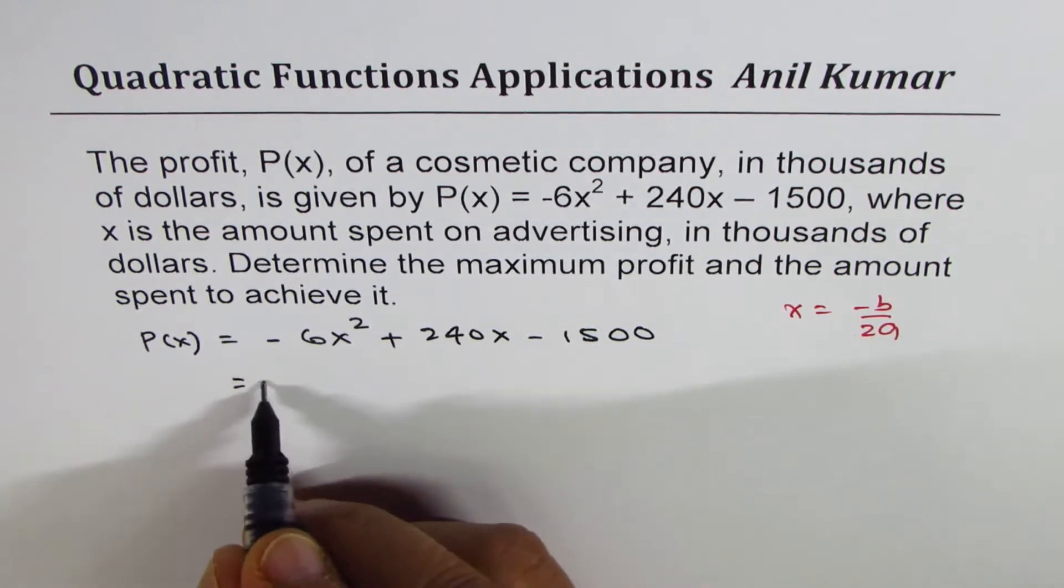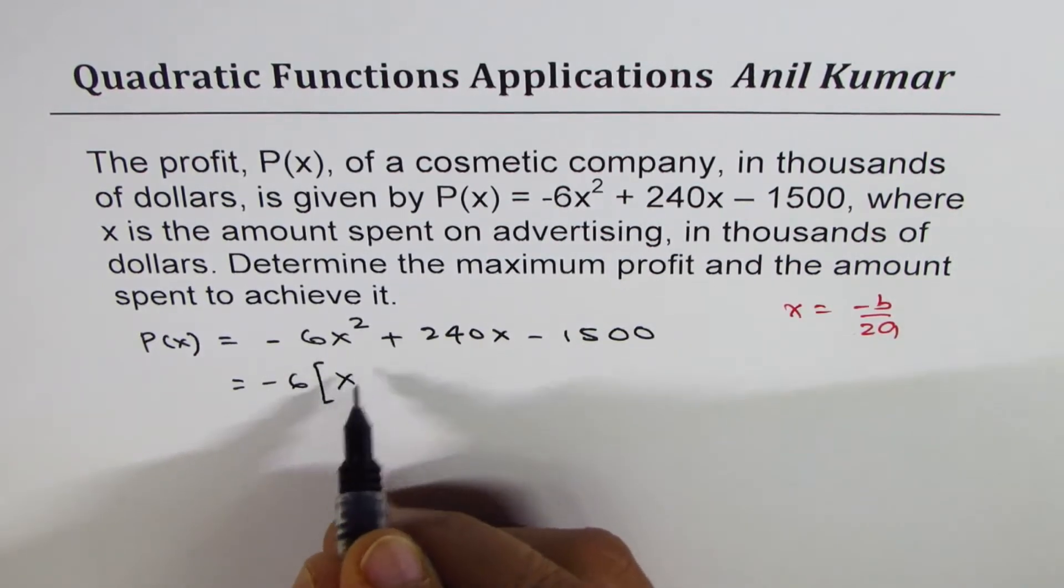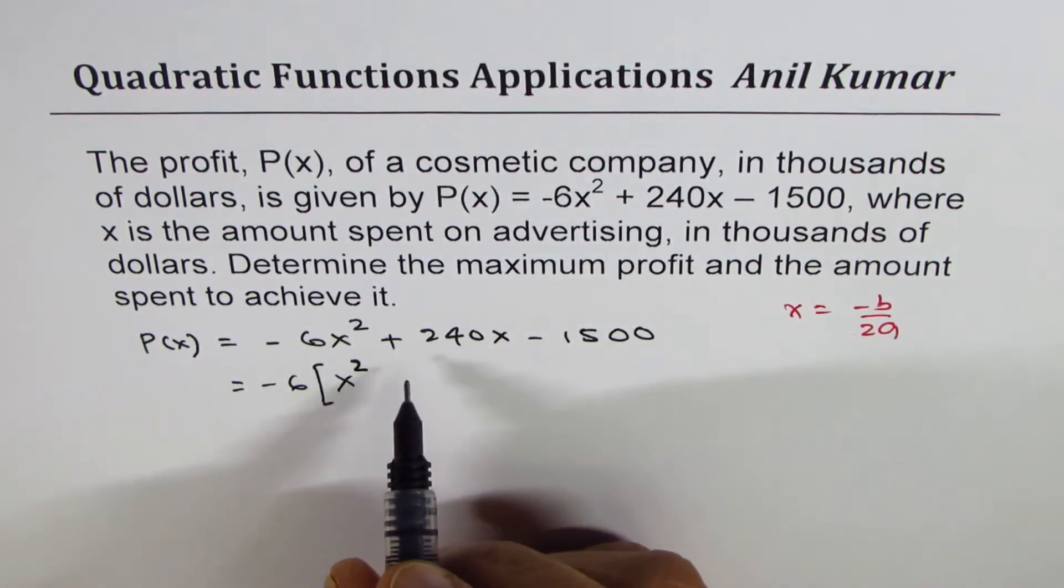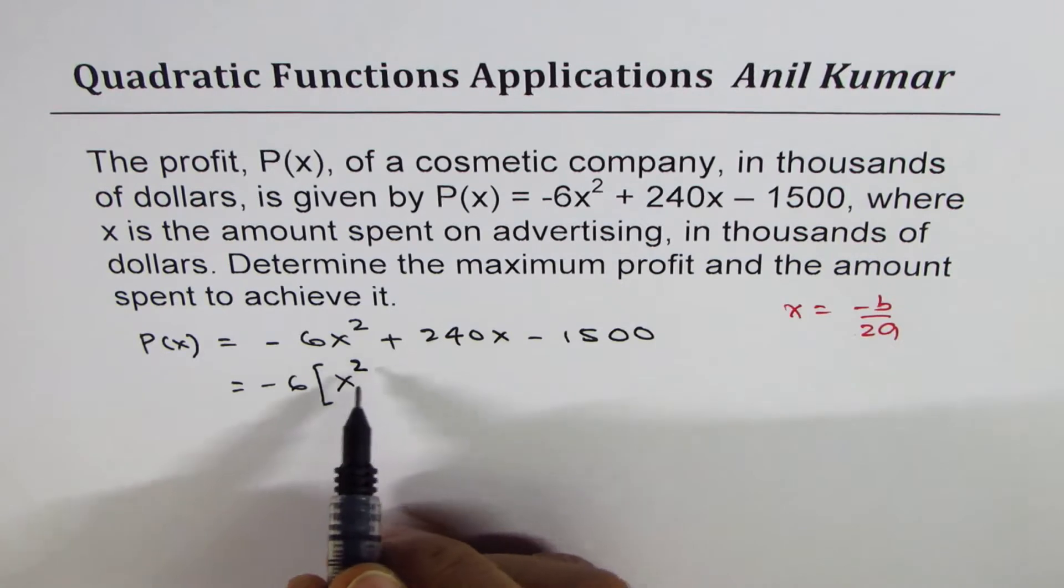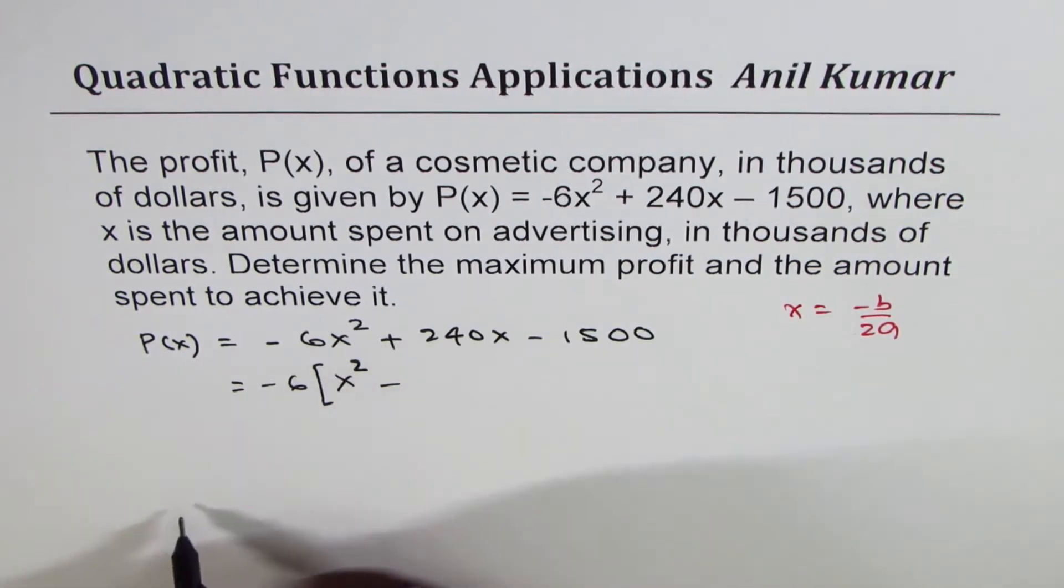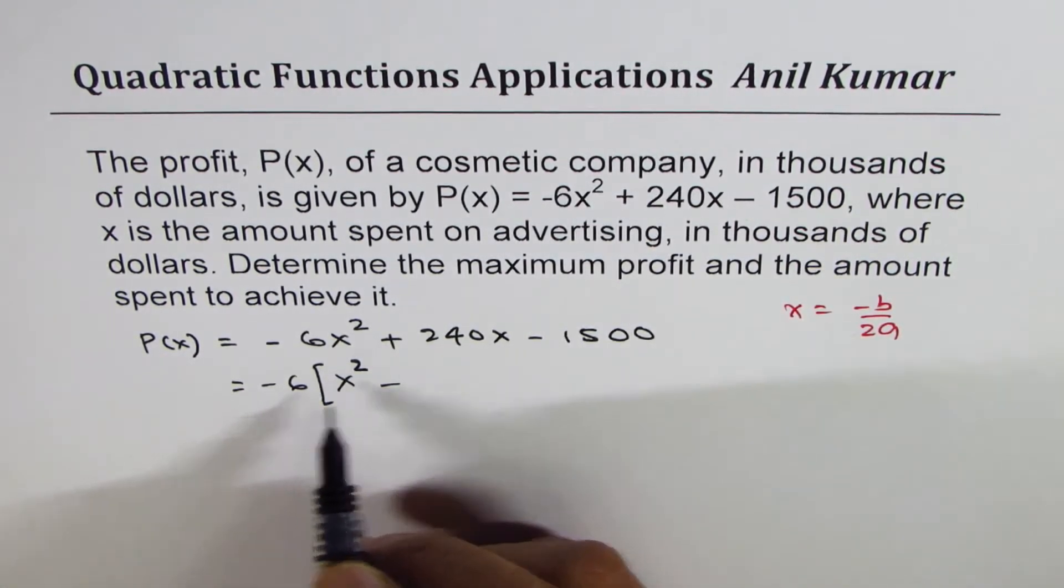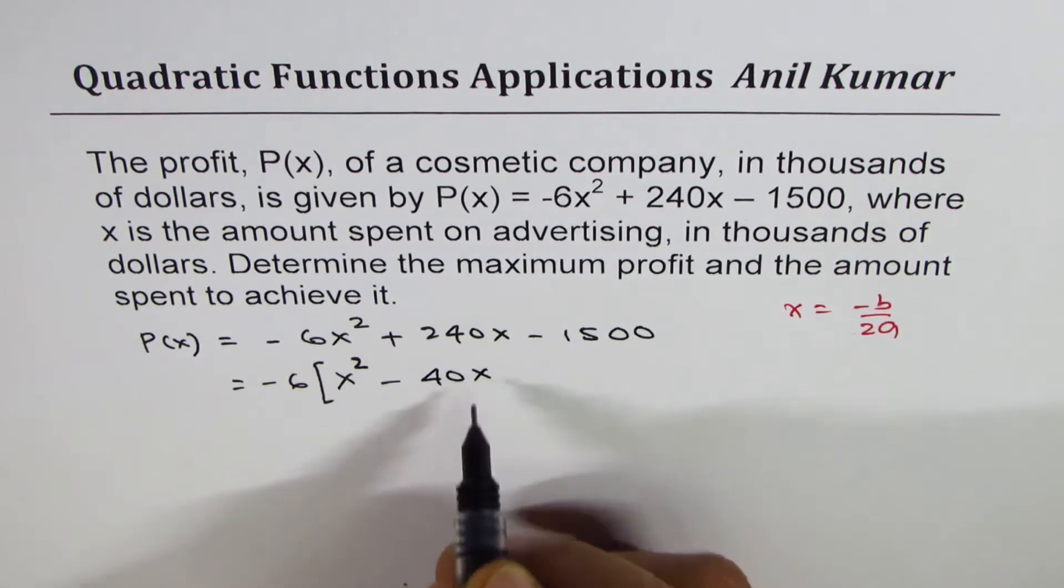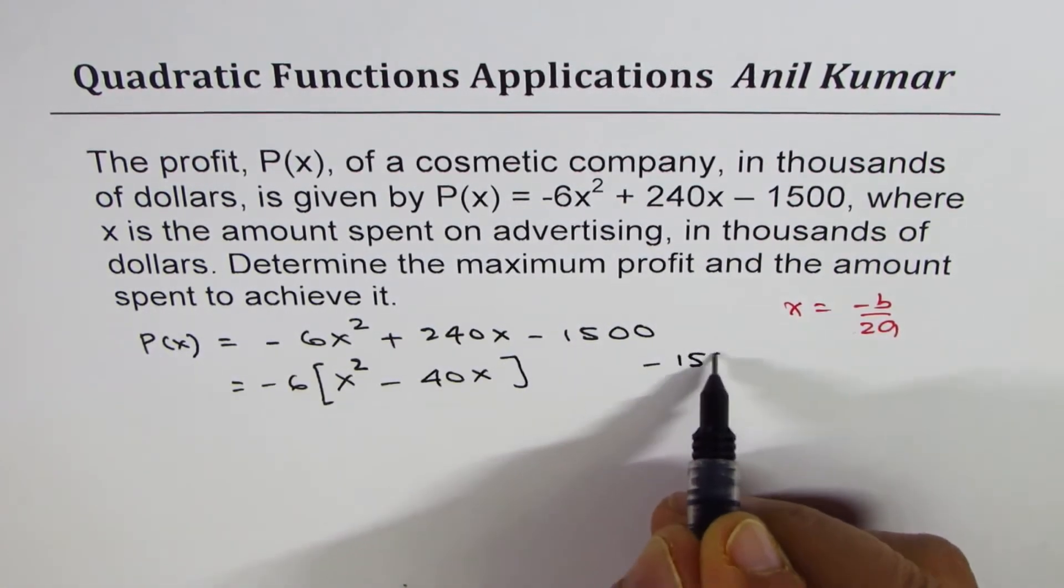So we can take -6 common. Let's practice that completing squares. This exercise is mainly to practice this. Plus divided by minus is minus, 240 divided by 6 is 40, x, keep this -1500 away.